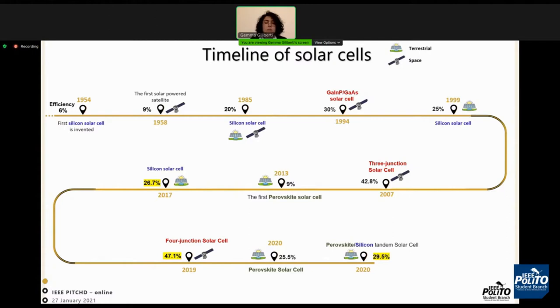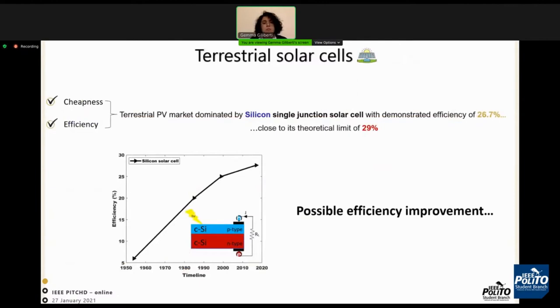However, multi-junction solar cells cannot be exploited for terrestrial markets since they have high manufacturing costs. The terrestrial PV market is dominated by silicon single junction solar cells with a demonstrated efficiency of 27.6%. This efficiency is close to the theoretical limit of 29%.